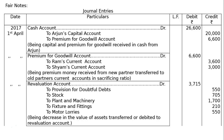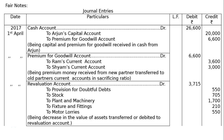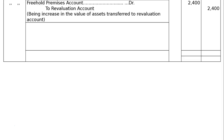Next entry: Revaluation account debited Rs. 3,715 total; to provision for doubtful debts Rs. 550, to stock Rs. 705, to plant and machinery Rs. 1,700, to fixtures and fittings Rs. 210, to motor vehicles Rs. 550. Being decrease in value of assets transferred to revaluation account. Then: freehold premises account debited to revaluation account — Rs. 2,400 each, being increase in value of assets transferred to revaluation account.